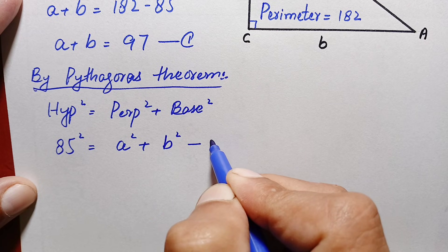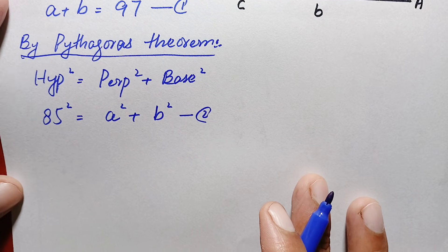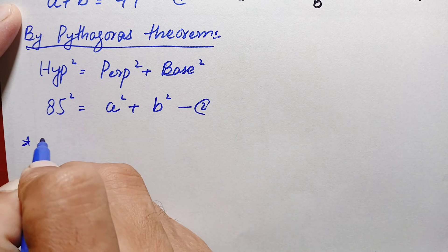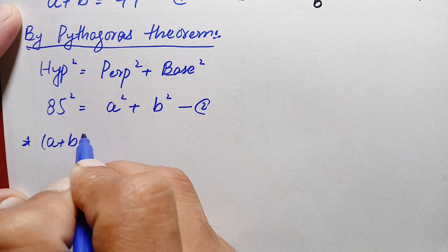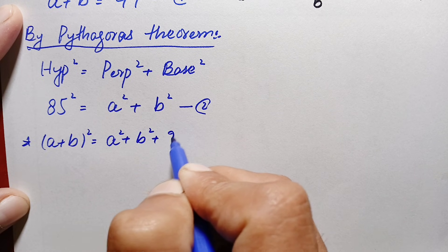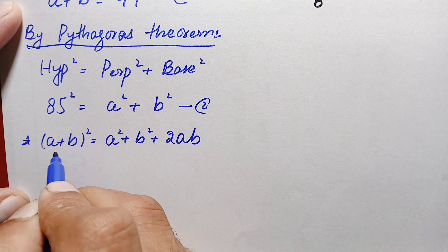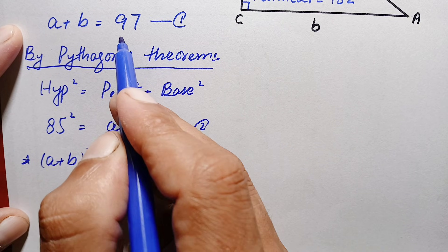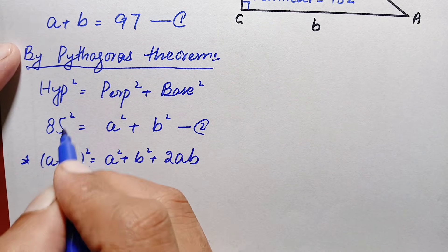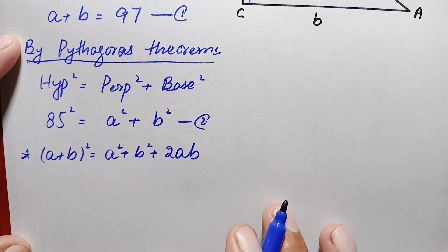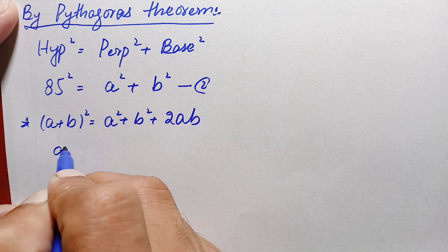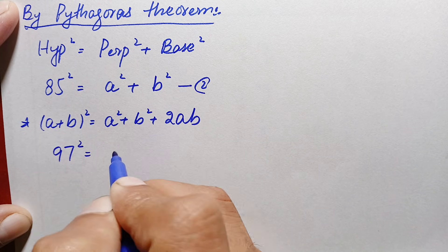Now we will use the algebraic identity: (a + b)² = a² + b² + 2ab. We have the value of a + b from equation one, which is 97, and the value of a² + b² from equation two, which is 85². Substituting these values: 97² = 85² + 2ab.